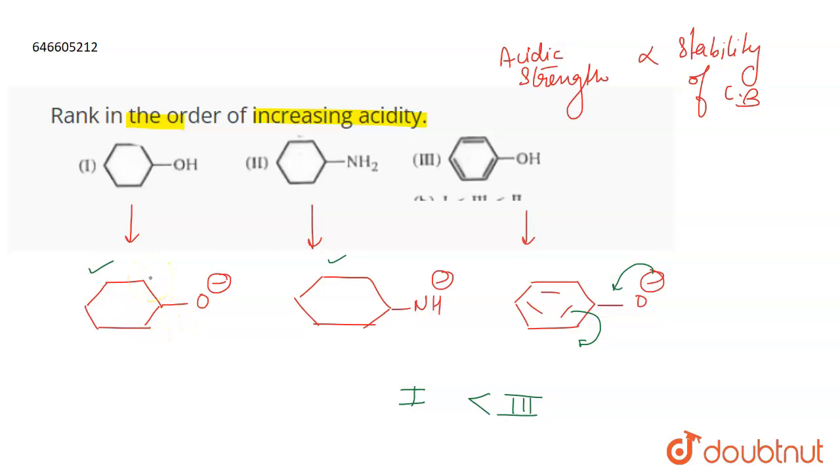Because out of oxygen and nitrogen, oxygen is more electronegative and the negative charge is on that. Therefore first is going to be more stable, then it will be second.